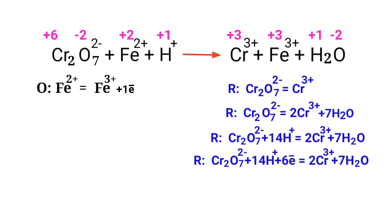Make electron gain equivalent to the electron lost. The electrons lost in the oxidation half reaction must equal the electrons gained in the reduction half reaction. There is one electron in the oxidation half reaction but six electrons in the reduction half reaction. To balance, multiply the oxidation half reaction by a coefficient of 6.